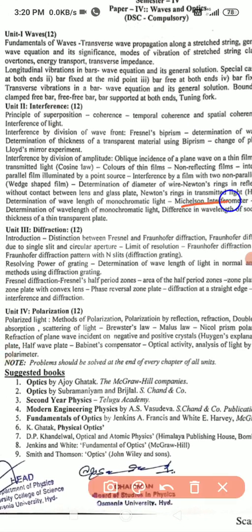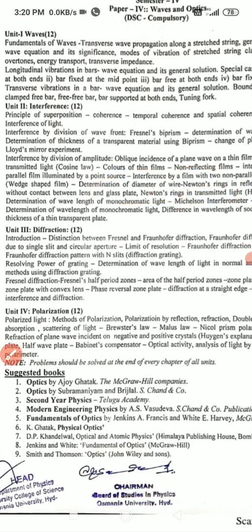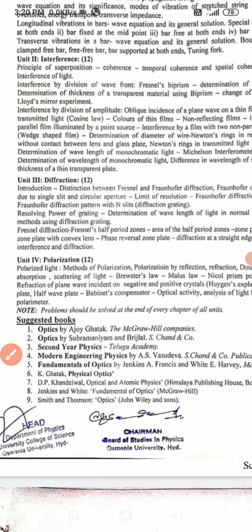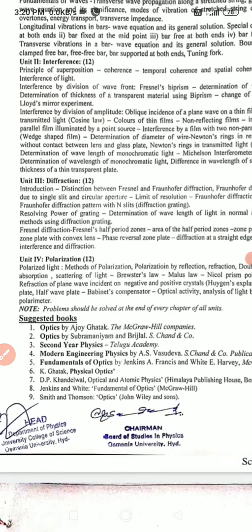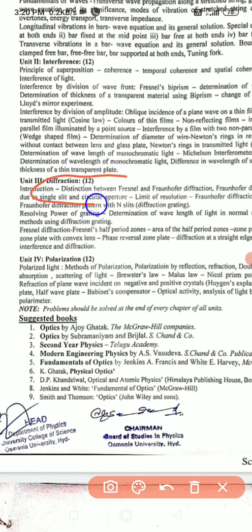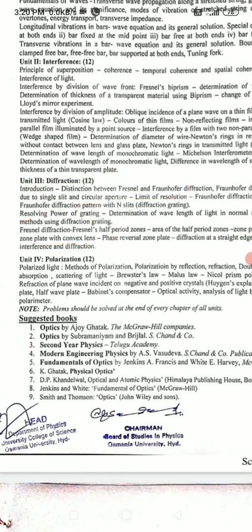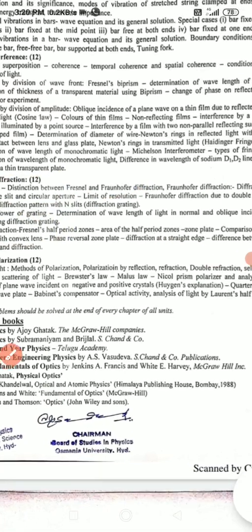From the second part, Michelson interferometer and determination of diameter of wire using Newton's rings are the important long answer questions. In the third unit, this unit is also divided into two parts. In the first part we will see Fraunhofer diffraction and in the second part we will see Fresnel diffraction.